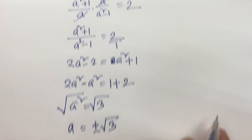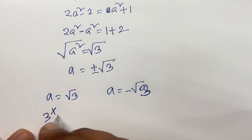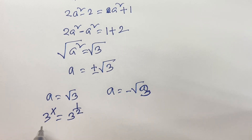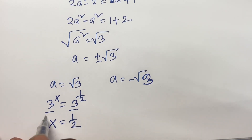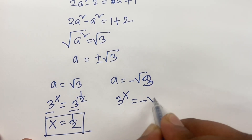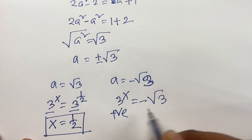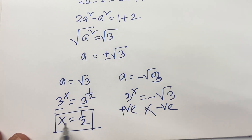We know that a equals 3 power x. So 3 power x equals square root 3, which equals 3 power half. Since the base is the same, the exponents are equal, so x equals one half. For the other case, 3 power x equals minus square root 3, but 3 power x is always positive, so this is not possible. Our final answer is x equals one half.